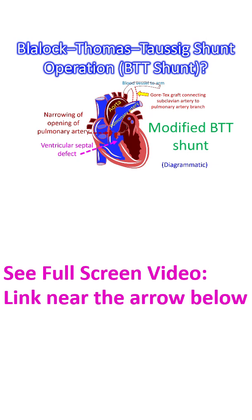The Blalock-Thomas-Taussig Shunt is an operation done to improve the oxygen levels in blood of children with certain birth defects of the heart.